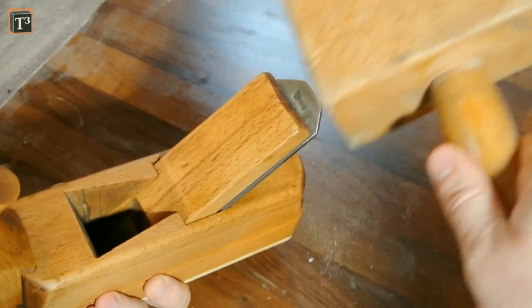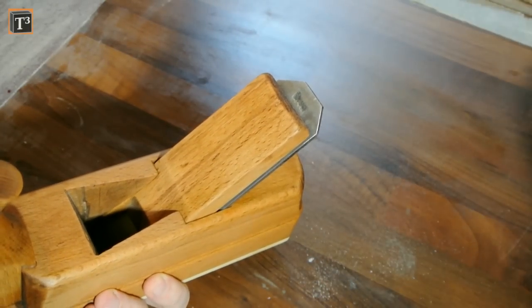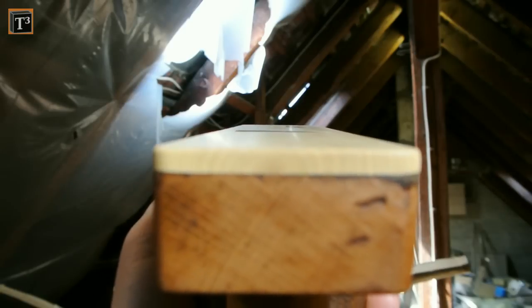Hitting the wedge only slightly makes it sit just tight enough. Use a soft hammer from wood or plastic. Control the position by looking along the sole.